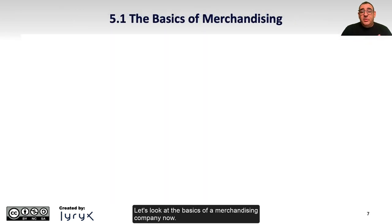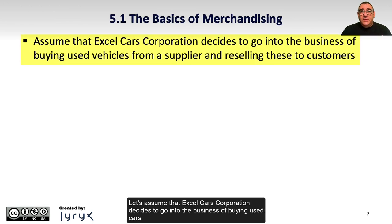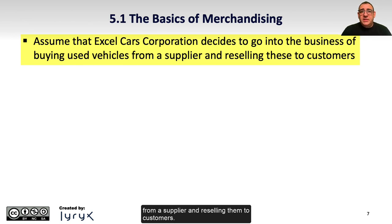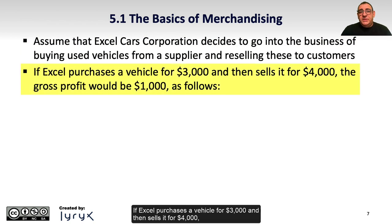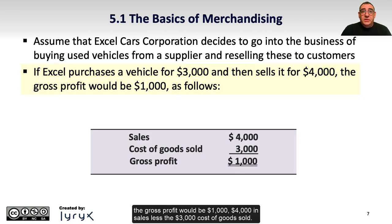Let's look at the basics of a merchandising company now. Let's assume that Excel Cars Corporation decides to go into the business of buying used cars from a supplier and reselling them to customers. If Excel purchases a vehicle for $3,000 and then sells it for $4,000, the gross profit would be $1,000 — $4,000 in sales less the $3,000 cost of goods sold.